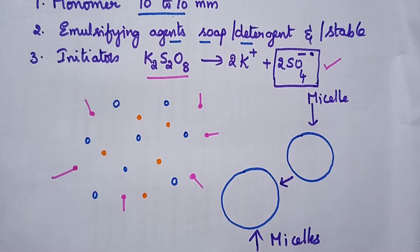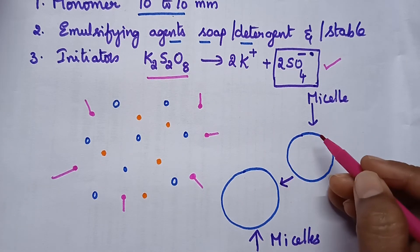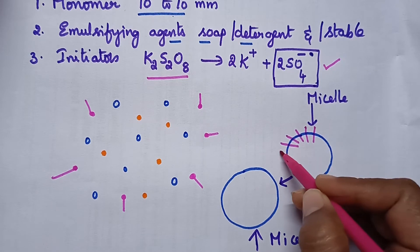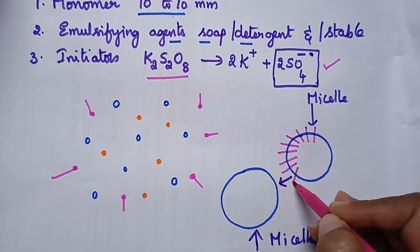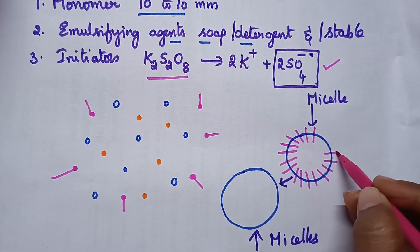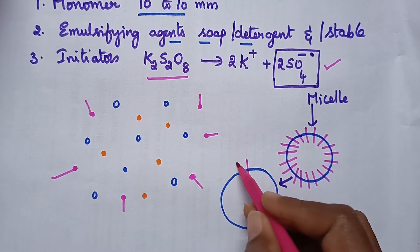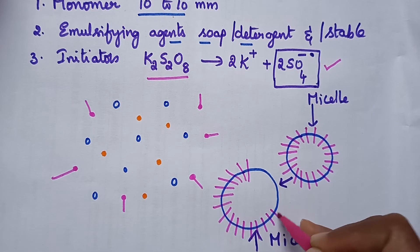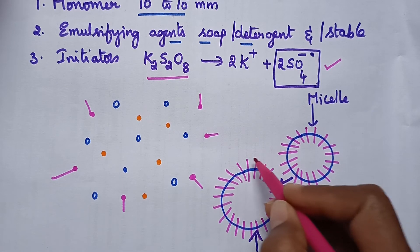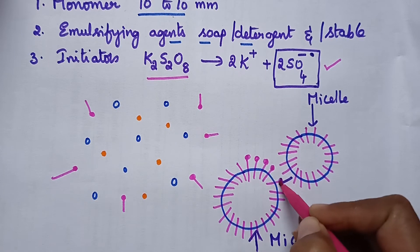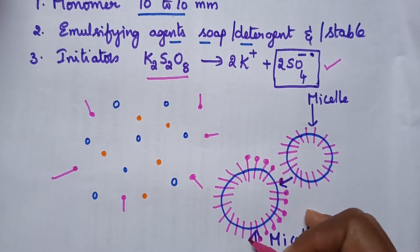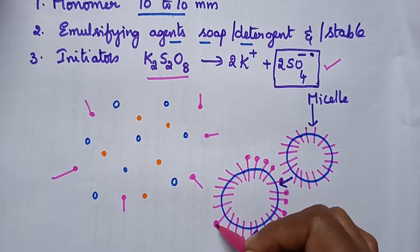In these micelles, the soap or detergent molecules arrange in such a way that the head parts are always projected outside the micelle, while the tail parts come very close to each other. In this way, at each monomer droplet, it results in the formation of a micelle.